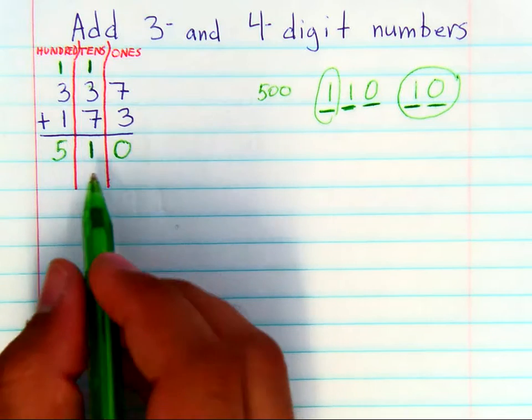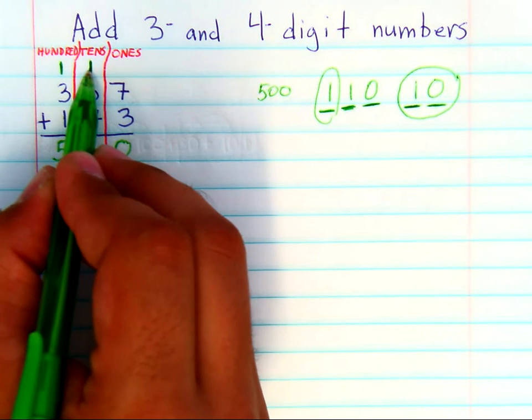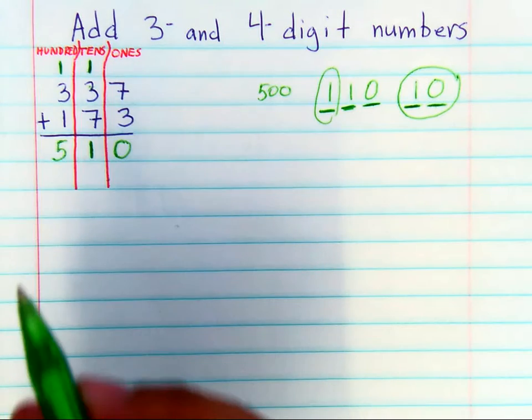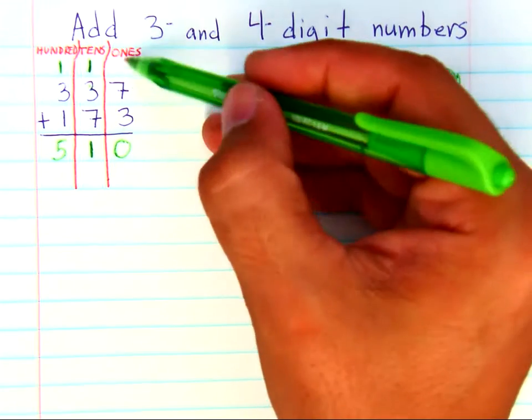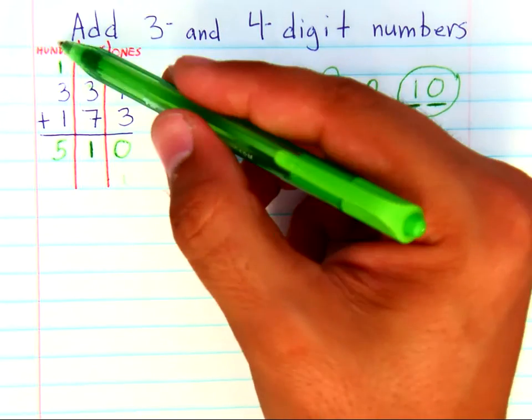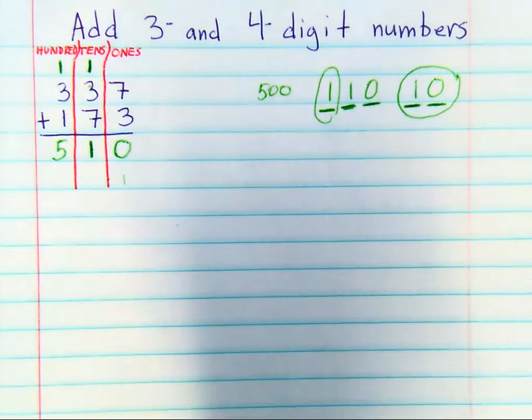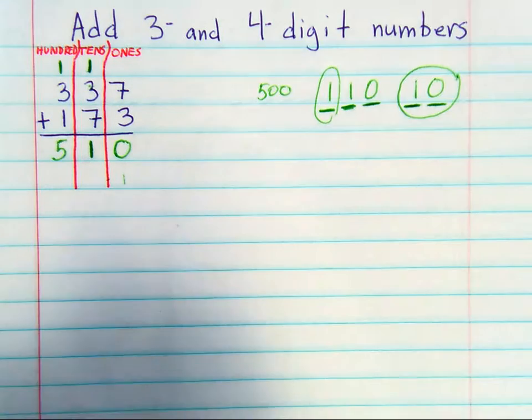But it's important to know why we're carrying the one. If you don't know why you're carrying the one, if you don't understand the place values and how regrouping occurs, later math becomes more difficult.